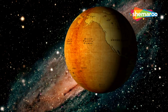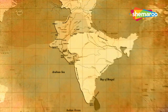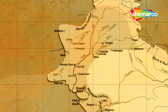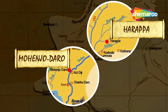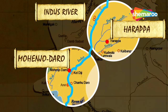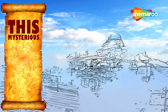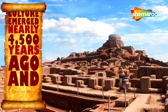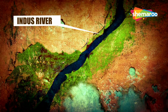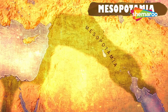Mohenjo-daro is one of the largest cities of the ancient Indus Valley civilization — one of the earliest civilizations known to mankind. In ancient times, Mohenjo-daro and Harappa, considered the twin cities, flourished on the banks of the river Indus, dating back to around 2500 BC. This mysterious culture emerged nearly 4,500 years ago, flourished for a thousand years, and profited from the highly fertile lands of the Indus river flood plains and trade with the civilizations of nearby Mesopotamia.